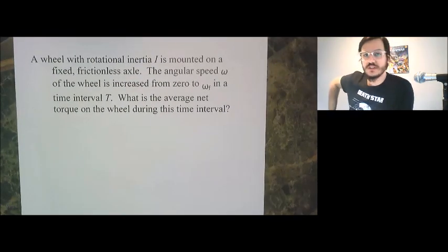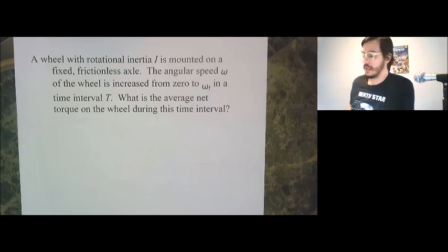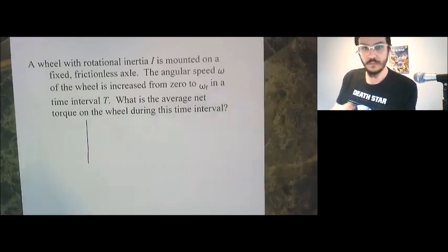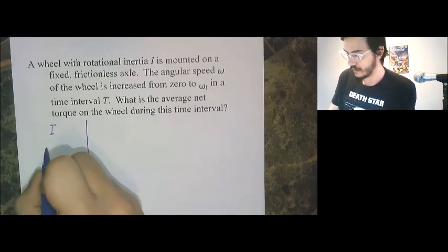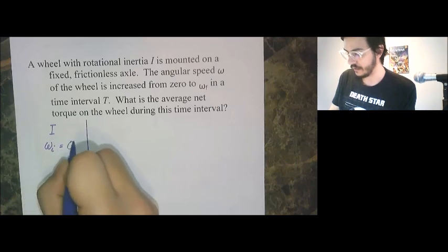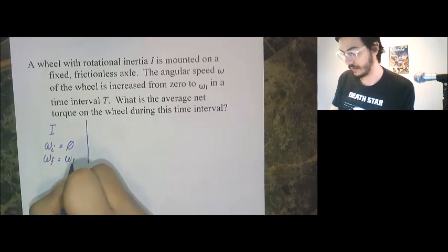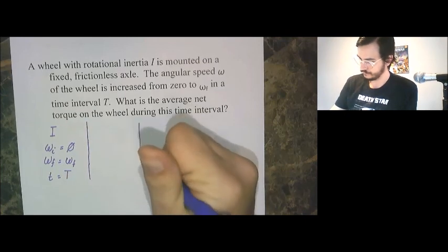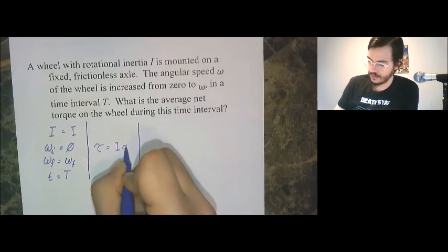A wheel with rotational inertia I is mounted to a fixed frictionless axle. The angular speed omega of the wheel is increased from 0 to omega F in a time interval T. What is the average net torque on the wheel during this time interval? Well, before we choose our torque definition, we are given a moment of inertia I, an angular initial speed of 0, an angular final speed of omega F in a time interval T.